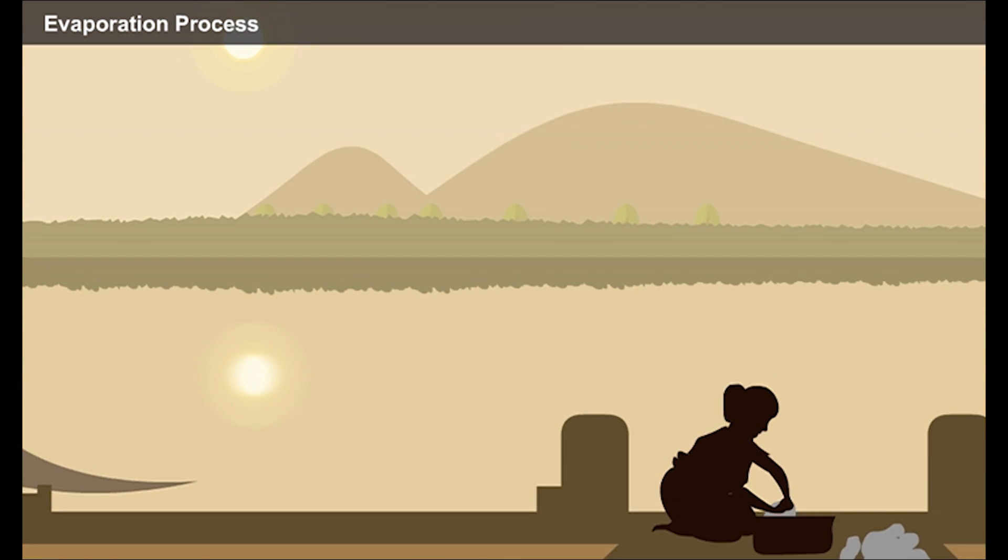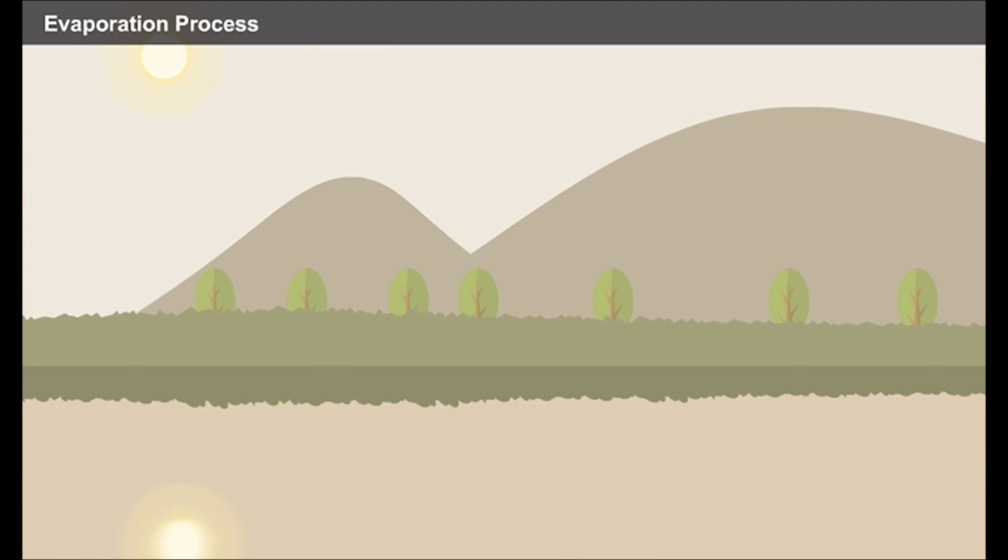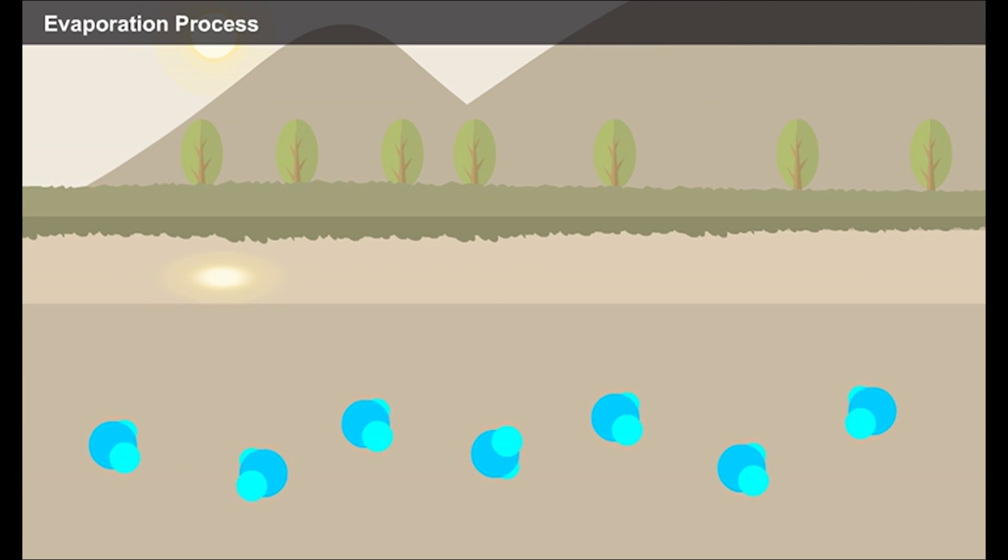Generally, when the atmosphere is calm and no other agents like heat, wind etc disturb the water surface, the molecules of water remain stable. As the sun rises and the wind starts to blow, the energy from the sun is transferred to the water, which agitates the water molecules.